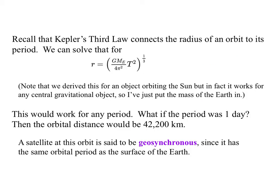Somewhat different application. Recall that Kepler's third law connects the radius of an orbit to its period. We can solve that over to say that r is the cube root of GM_E over 4π² all times T². We derived this from something orbiting the sun, but since all the force laws are the same, it works for any central gravitational object. So I've just put the mass of the earth in.